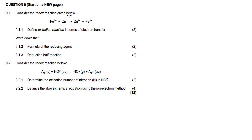Now level 9.1: consider the redox reaction given below. Iron(III) ion reacts with zinc to form zinc ion and iron(II) ion. Question 9.1.1: define the oxidation reaction — define oxidation in terms of electron transfer.